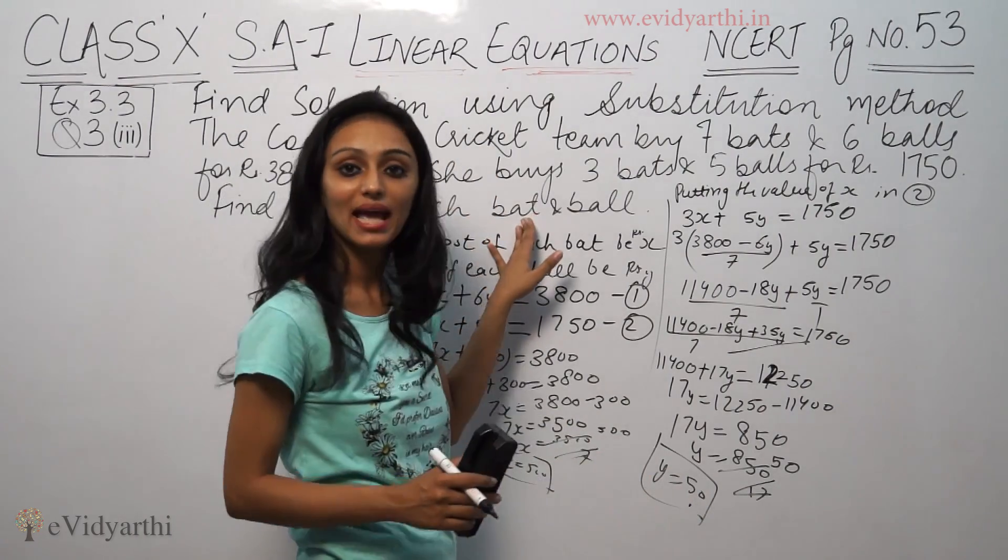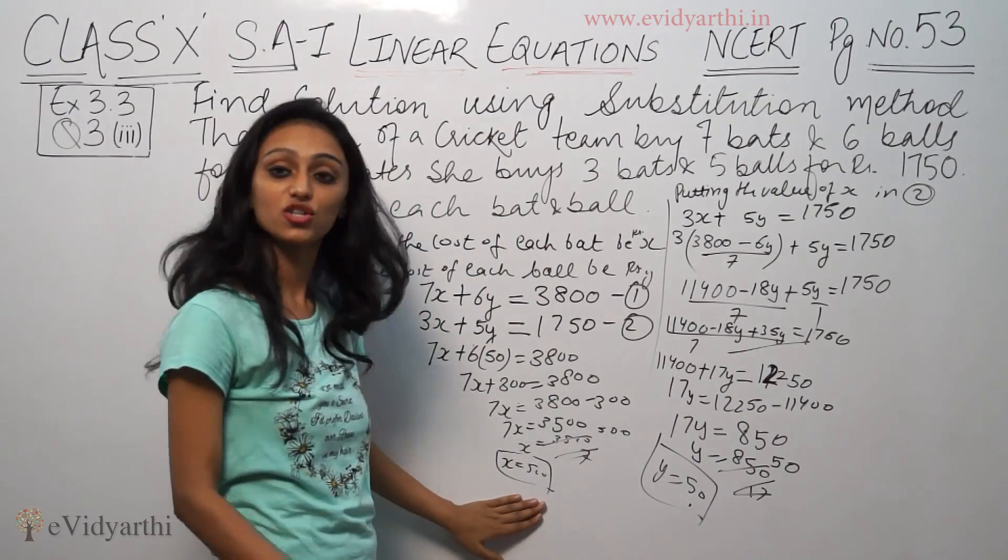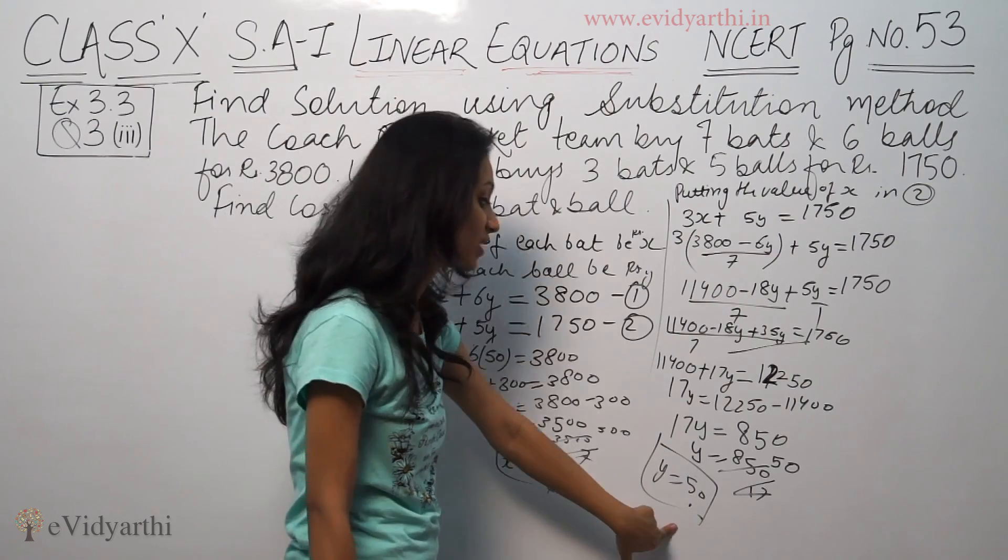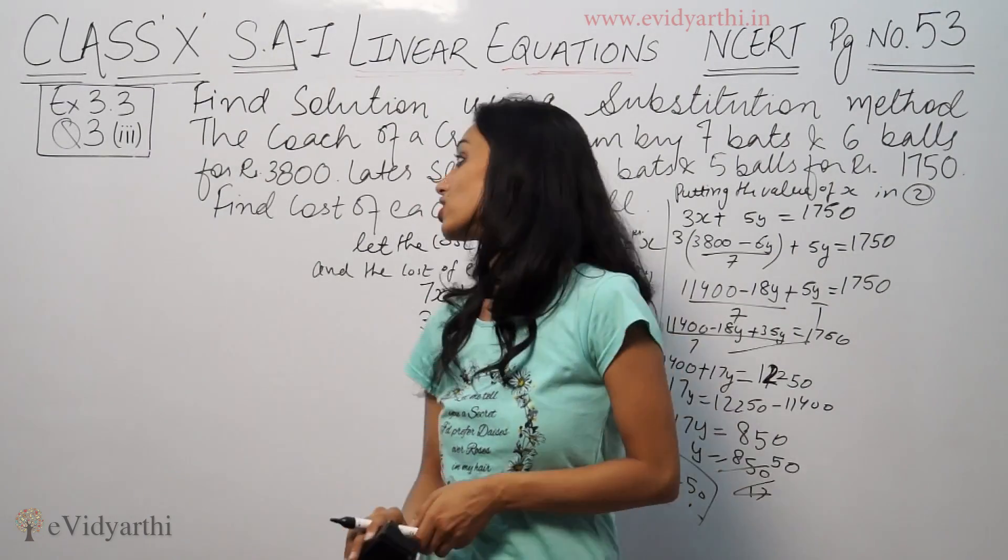That means x equals 500 and y equals 50. That means cost of 1 bat is rupees 500 and cost of 1 ball is rupees 50. So this is how you do these science questions.